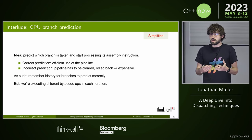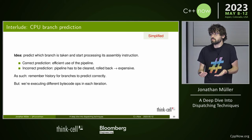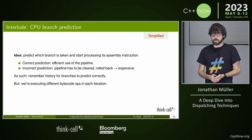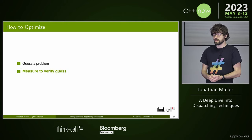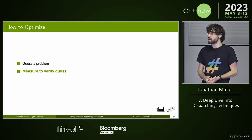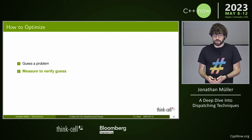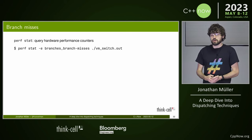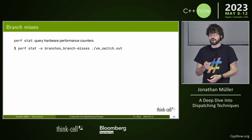However, in our dispatch loop, each loop iteration executes a different bytecode instruction. How can the branch predictor predict anything when we're doing something entirely different every time? The branch predictor doesn't really help us here. So our guess is that branch prediction is the issue. Step two: measure to verify that it is actually the underlying cause.